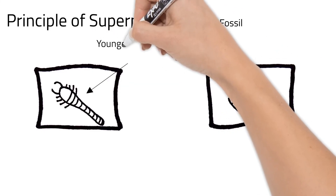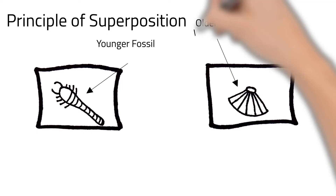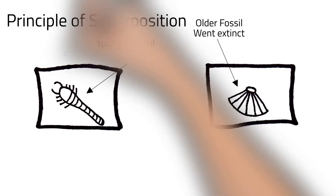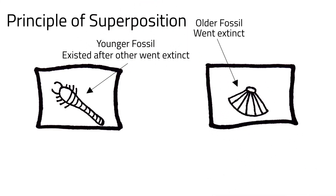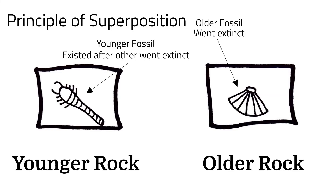— say these went extinct before these were around, then we know this rock is older than this one because of the type of fossils they contain.